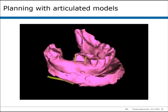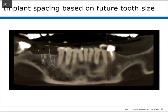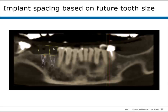In this first situation, this illustrates planning with articulated models. Initially, the implant is placed in line with the first bicuspid, and a virtual abutment 7 millimeters in diameter is placed, which approximates the size of a bicuspid tooth. By placing the mesial of this abutment on the distal of the adjacent tooth, the spacing between the implant and the tooth is perfect — based upon the future tooth size.